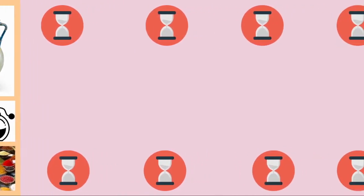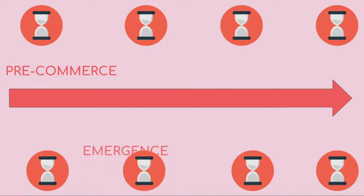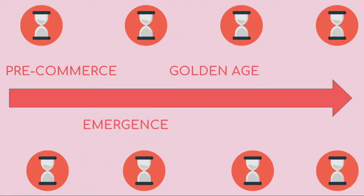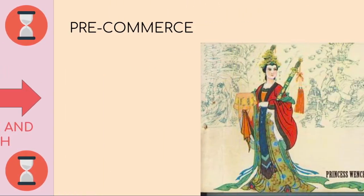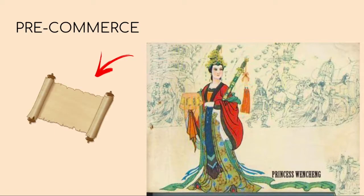We can establish the chronological order of the Silk Road in the following way: pre-commerce, emergence, golden age, and decline. During the Qin Dynasty, from 221 BCE until 207 BCE, we can find the first exchanges of silk, not as a means of trade, but as a diplomatic tool to solve regional conflicts, as it was considered a luxury product.